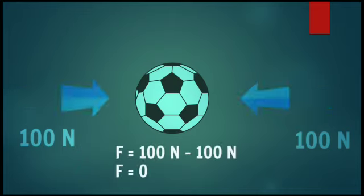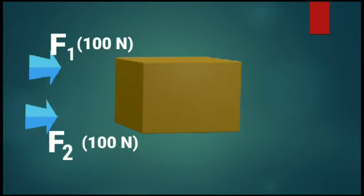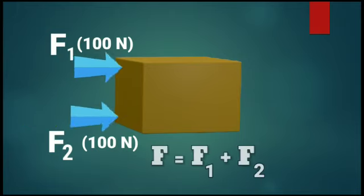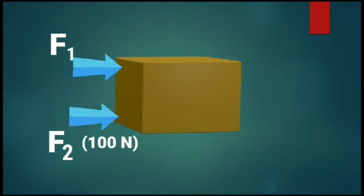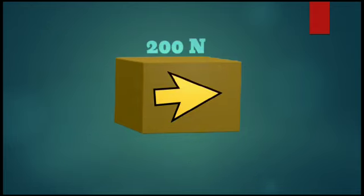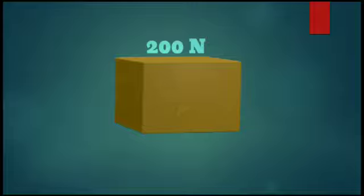Now if the forces are acting on an object along the same direction, to find the effective force on the object we can add the magnitudes of the forces acting on the object and the direction of the effective force will be along the same direction. Now let's summarize the class.